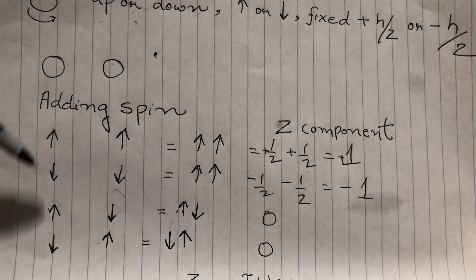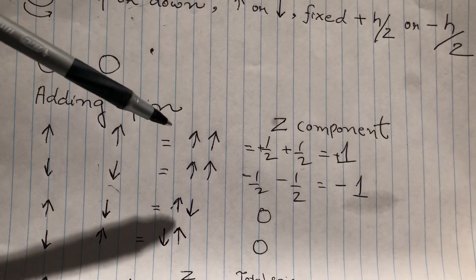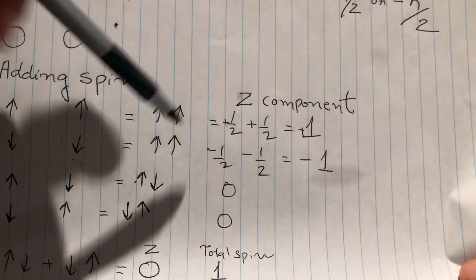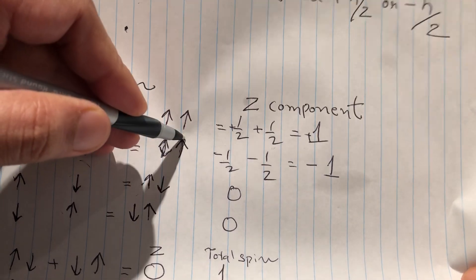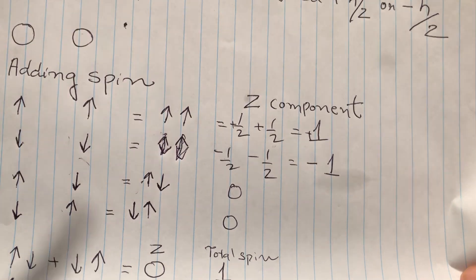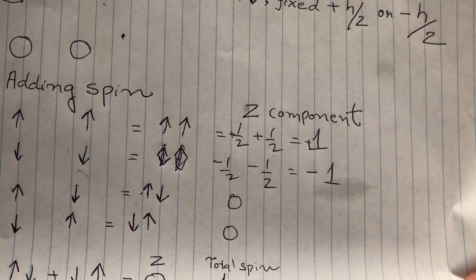Similarly, if both are down, so if both are down, you have minus half and minus half is equal to minus one.